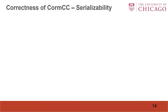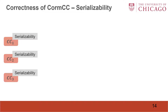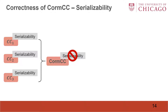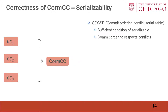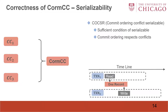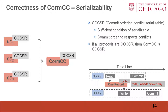The second question is: does COMCC maintain serializability? While each protocol can maintain serializability individually, this might not be true for COMCC. Therefore, we use a property shared by many protocols to maintain serializability, which is commit ordering conflict serializable (COCSR). It is a sufficient condition of serializability, and it says commit ordering respects conflicts. For example, if two transactions have a conflict on one record where transaction 1 reads the record before transaction 2 writes it, the COCSR protocol guarantees transaction 1 commits before transaction 2. We prove that if all protocols are COCSR, then COMCC is COCSR.